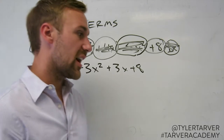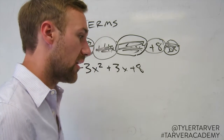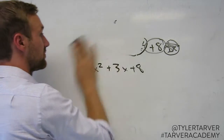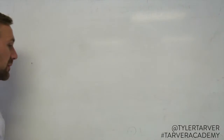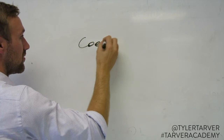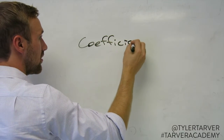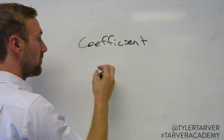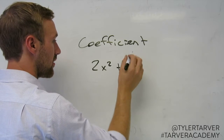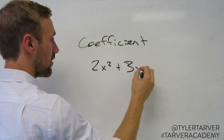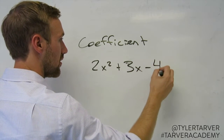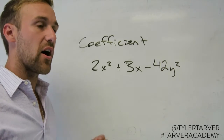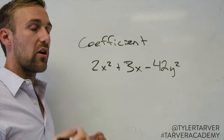The last thing I want to show you is called a coefficient. Let's talk about coefficients. Simply put, a coefficient is the number in front of your variable.